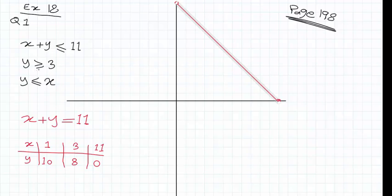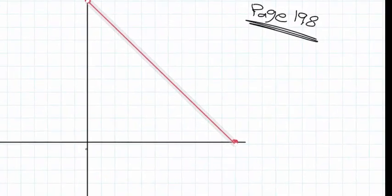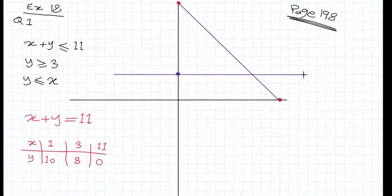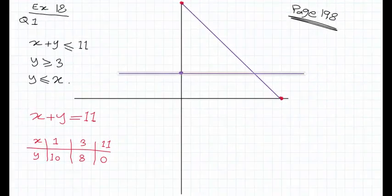Y is greater than or equal to 3 — this is just a horizontal straight line passing through 3 on the Y axis. And the third inequality: X equals Y. Remember, when X equals Y, it will always be a straight line passing through the origin.